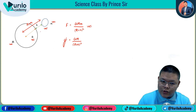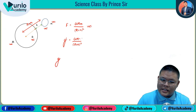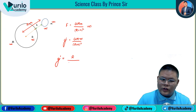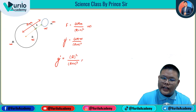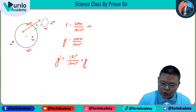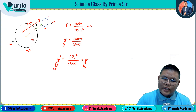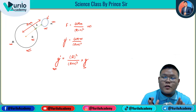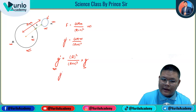This gives us the acceleration due to gravity at height h. The formula is: g dash is equal to R squared upon (R plus H) squared, into G, where G is the acceleration due to gravity at the Earth's surface.